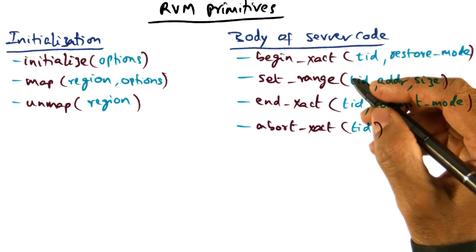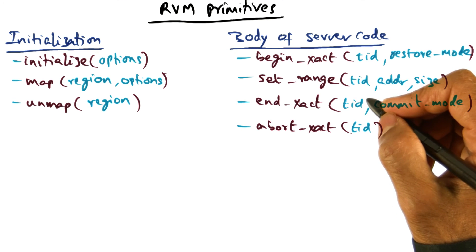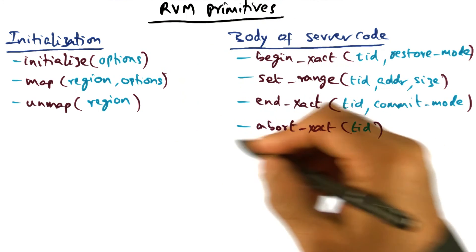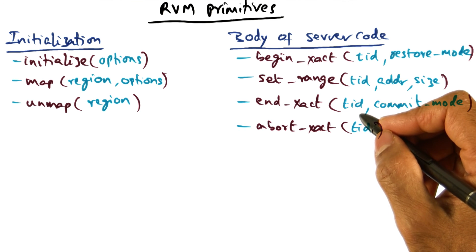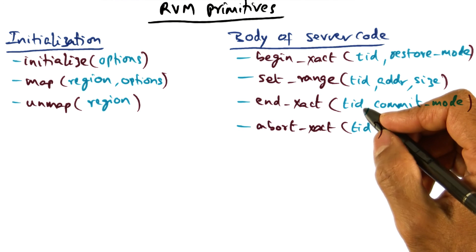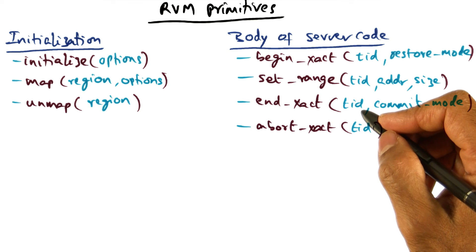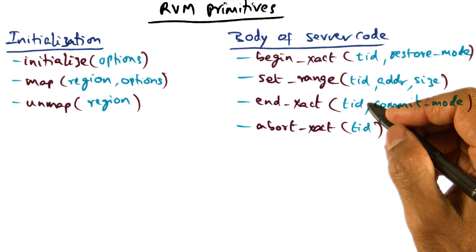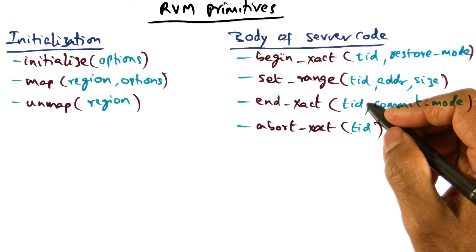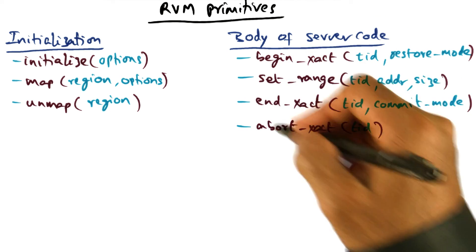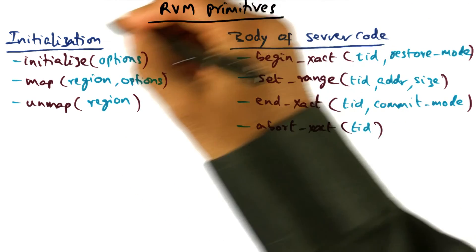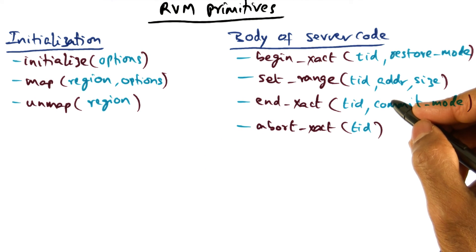From the developer's point of view, this is all that the developer needs to know and use in order to write an application that has persistent data structures — as simple as that. All the heavy lifting needed to accomplish the developer's intent for persistence, enshrined in these primitives, is taken care of by the RVM runtime.